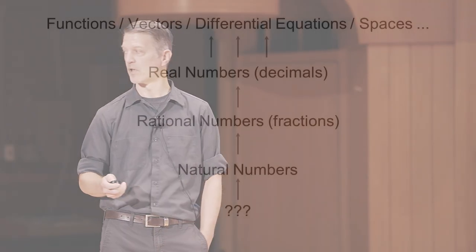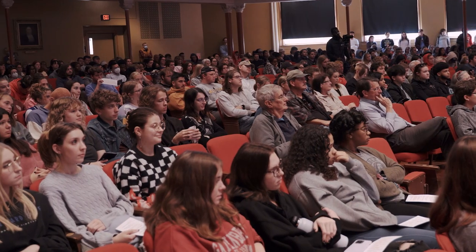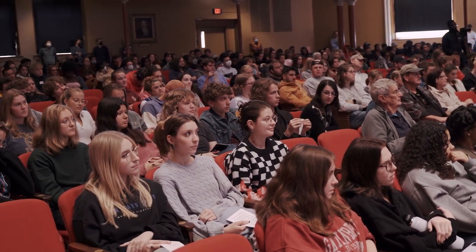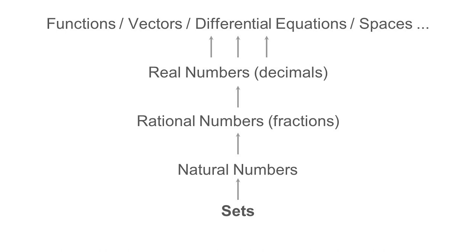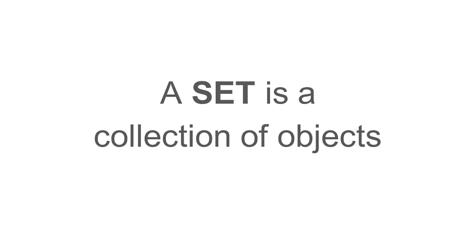And so the question of what the natural numbers actually are becomes important. Are the natural numbers the irreducible particles out of which all mathematical matter is built? Or are there even more fundamental mathematical objects? The answer to that question is yes. And the fundamental objects out of which the natural numbers themselves can be built are called sets. The idea of a set is pretty simple — a set is just a collection of objects. Sets are abstractions that allow us to move from individual objects to collections, and those collections then form new objects which are distinct from the objects that they collect.